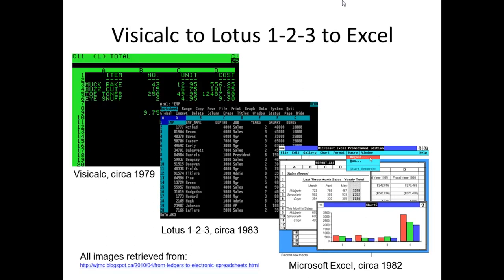VisiCalc, as displayed on the slide, was originally offered as the first computer program available for the Apple II. It caused the computer to be very successful and, according to Wikipedia, it propelled the Apple from being a hobbyist toy to a useful tool for business. The software allowed calculations to be run automatically and also allowed for what-if scenarios or hypotheses to be tested.